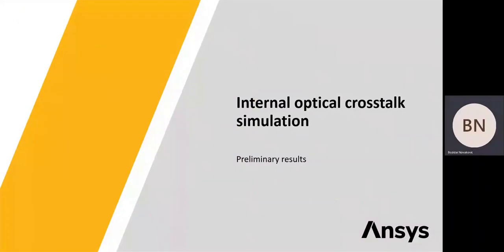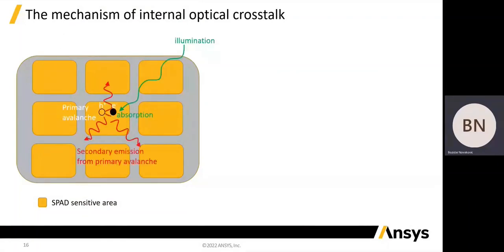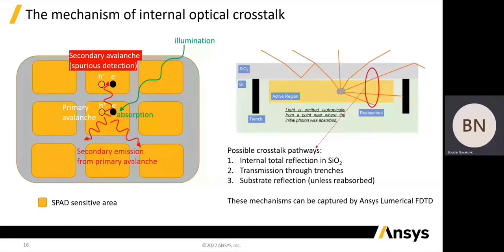In the last section, we will discuss some preliminary results from internal optical crosstalk simulations. After light illuminates a SPAD array, the resulting light absorption may trigger avalanches in SPAD pixels. These avalanches produce secondary photon emission, which can propagate between pixels, get absorbed, and trigger spurious avalanches in neighboring pixels. Out of all possible paths light can propagate away from the avalanche, there are a couple that may be responsible for the internal optical crosstalk. First, light that undergoes total internal reflection in the SiO2 layer can travel extended distances between pixels. Second, light can directly transmit through trenches between pixels. Lastly, light propagating downward can reflect back from the substrate interfaces unless it is reabsorbed in the meantime.